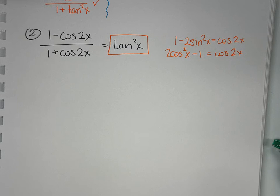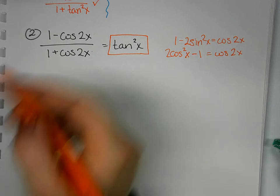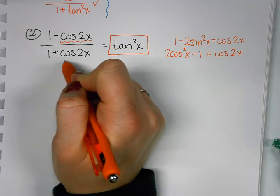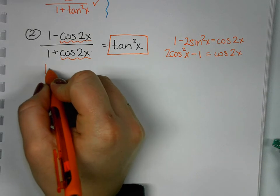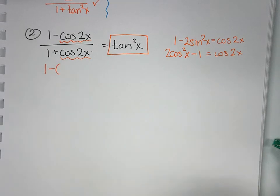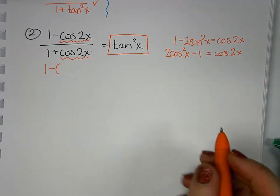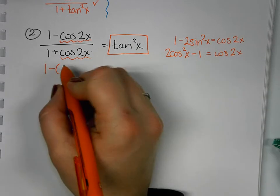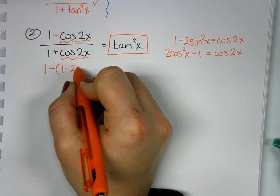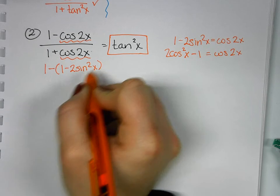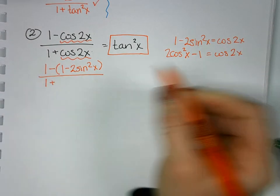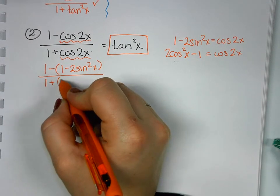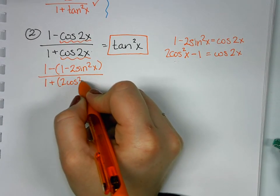That will give me my sine on top and my cosine on bottom, even though they both are considered a cos 2x. When I do this substitution, I end up with 1 - (1 - 2sin²x) on top. I'm putting my parentheses so that I can remember to distribute my negative. On the bottom: 1 + (2cos²x - 1).